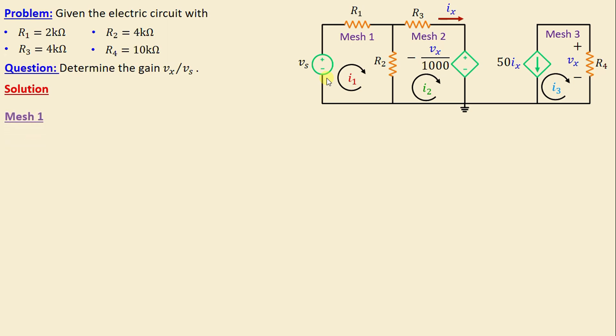Let's start first with mesh 1. By applying Kirchhoff's voltage law in mesh 1, we can write negative Vs plus R1 I1 plus R2 I1 minus I2 is equal to 0. If we continue simplifying this equation, we obtain negative Vs plus R1 plus R2 I1 minus R2 I2 is equal to 0.